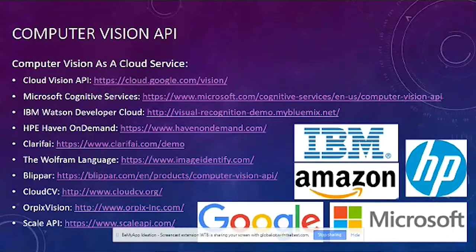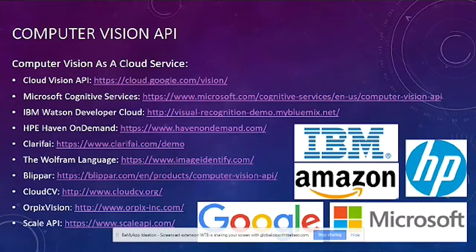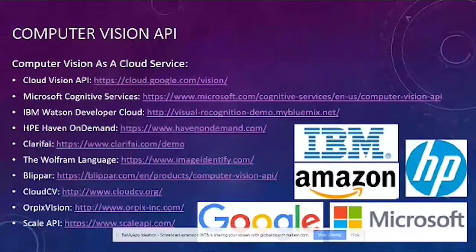If you want to train your own model and deploy, you can use Clarify or ODE from Engine. For specific requirements like detecting a vehicle or a number plate, you can use ORPEX Vision. These are all based on a subscription model, so you don't get to see how the operation happens internally. You use a subscription, provide credit card details, and use the API for a set number of calls and pay accordingly.